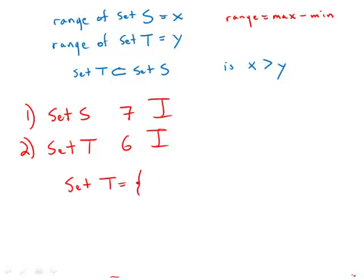Suppose set T equals the set two, four, six, eight, ten, twelve, a six-member set. And so we know that set S will have all of these members and one more member.